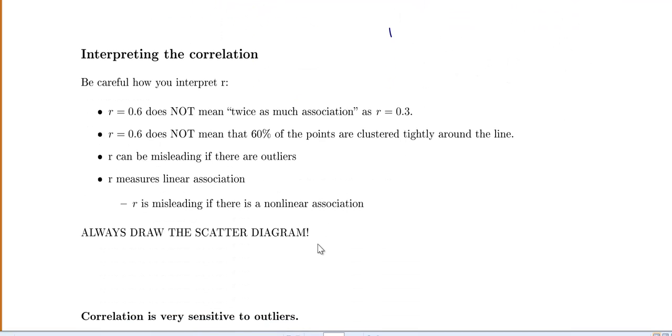How do you interpret the correlation? R equals 0.6 does not mean that there's twice as much association as 0.3. R equals 0.6 does not mean that 60% of the points are clustered tightly around the line. R equals 0.6 does not mean that the line goes through 60% of the points.